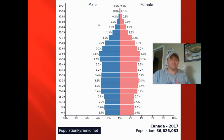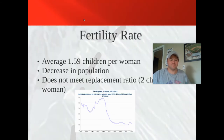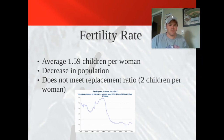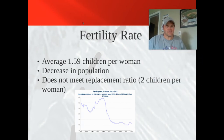Canada is at Stage 4 of the demographic transition — you probably could have guessed that — with fewer than two children per woman.